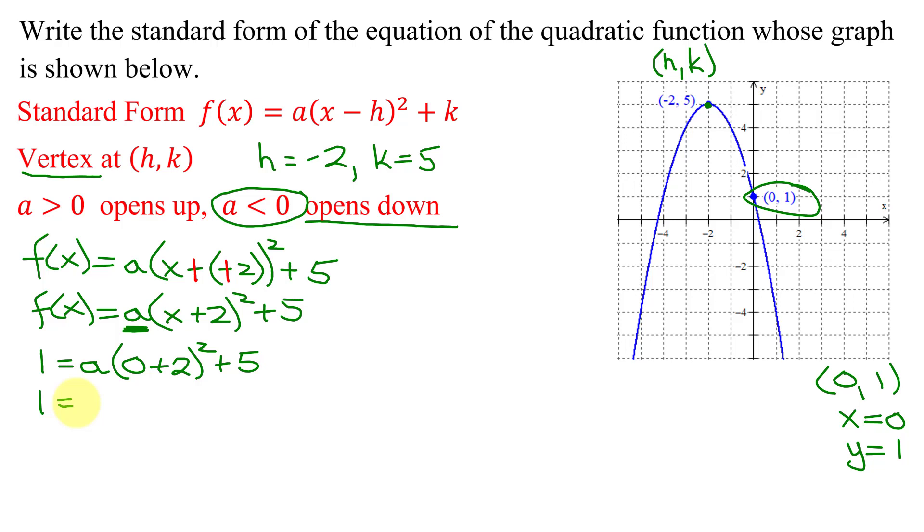So 1 equals 0 plus 2 is 2, 2 squared is 4. So I have 4a plus 5. Subtracting 5 from both sides of this equation, I get 1 minus 5 is negative 4 equals 4a. Dividing both sides by 4, these 4s reduce, and I get a equals negative 4 divided by 4 is negative 1.